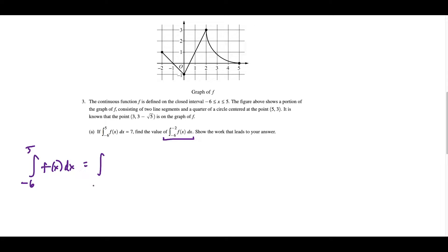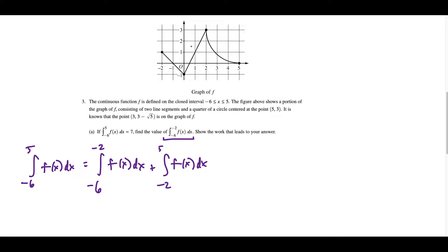This is the same as the integral from negative 6 to negative 2 plus the integral from negative 2 all the way to 5. The integral represents the area under the curve, so the total area equals the area of this piece plus the area of this piece — the whole equals the sum of its parts. The integral from negative 6 to 5 is given to us, the integral from negative 6 to negative 2 is what we're trying to find.